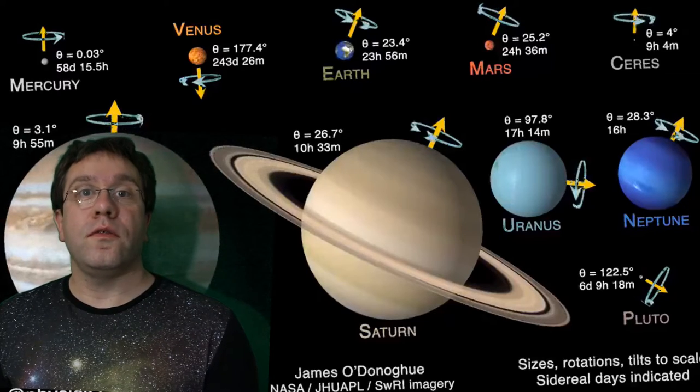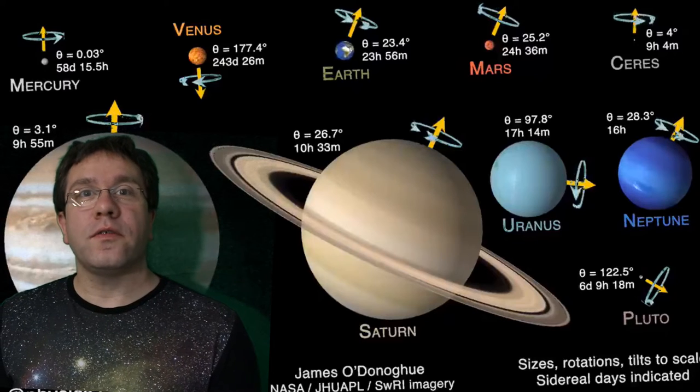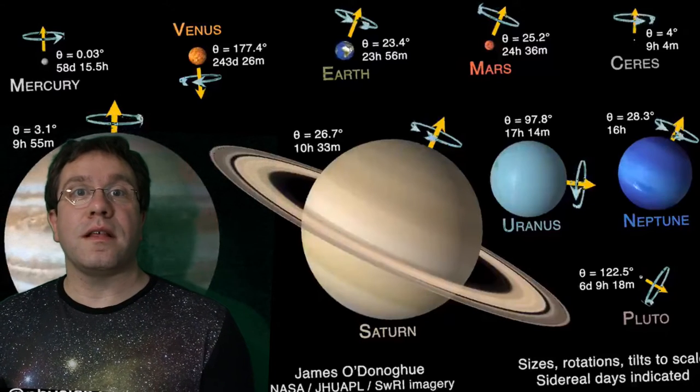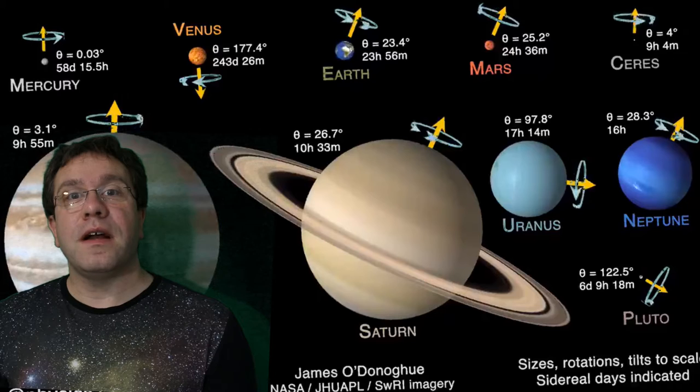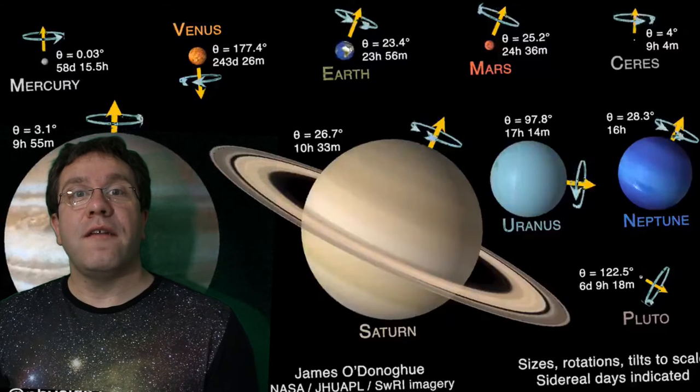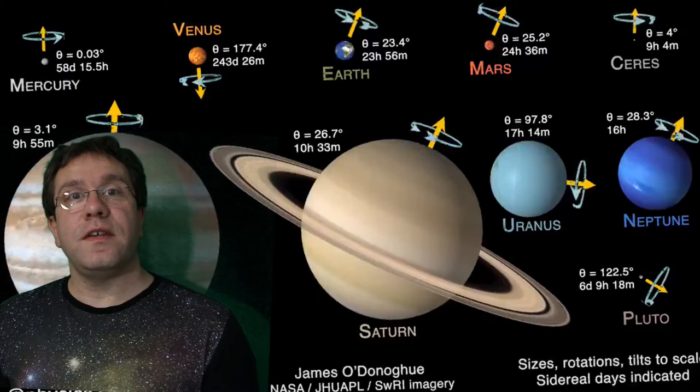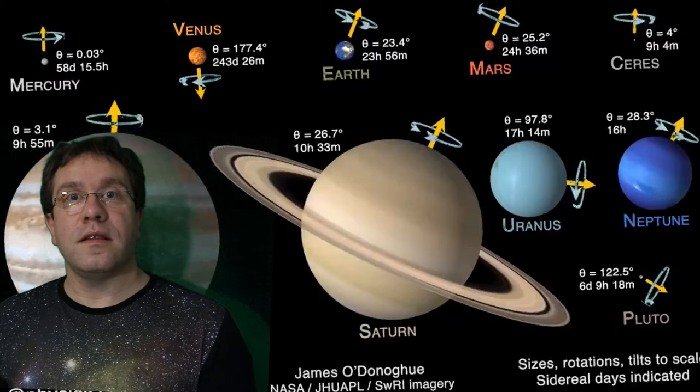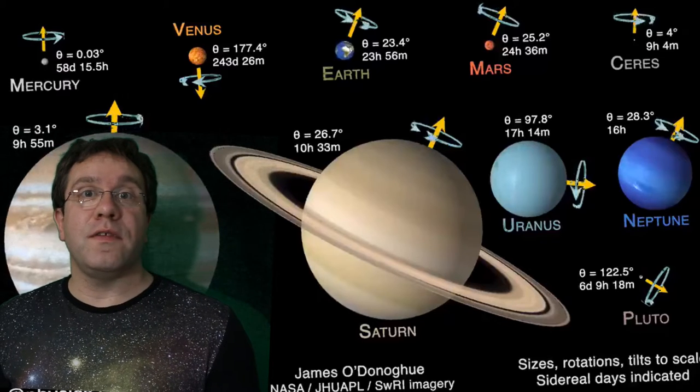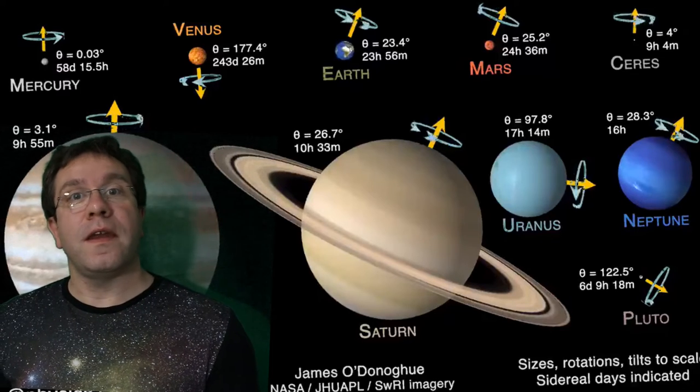We're used to Earth rotating every 24 hours because that's the length of the day. But in fact, Earth rotates every 23 hours, 56 minutes, and 4 seconds. That's the time between a given star rising and then rising again the next day.